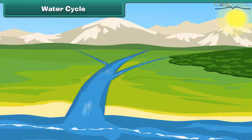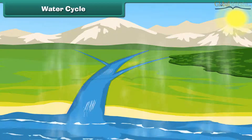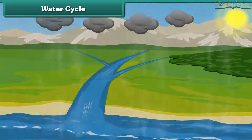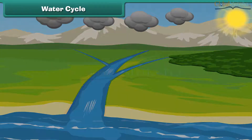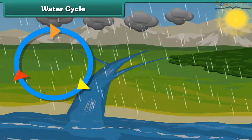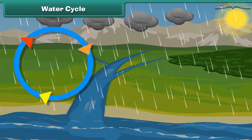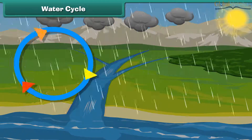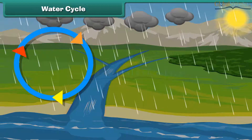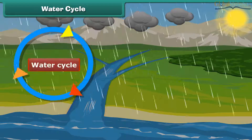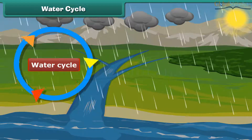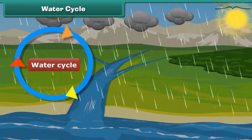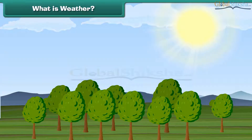Finally, the water reaches the water bodies and gets collected there. Water is constantly cycling from land to air and back to land again. This process is known as the water cycle. Therefore, kids, water on our earth will never come to an end.